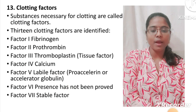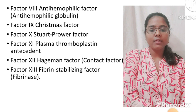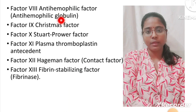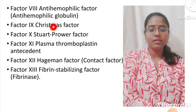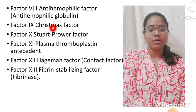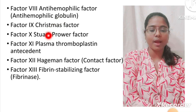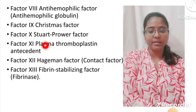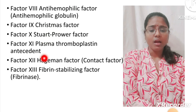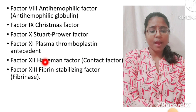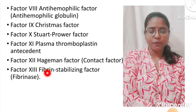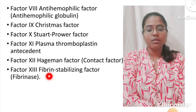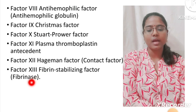Factor 7: stable factor. Factor 8: anti-haemophilic factor, which is also called as anti-haemophilic globulin. Factor 9: Christmas factor. Factor 10: Stuart power factor. Factor 11: plasma thromboplastin antecedent. Factor 12: Hageman factor, also called contact factor. Factor 13: fibrin stabilizing factor, which is also called as fibrinase.